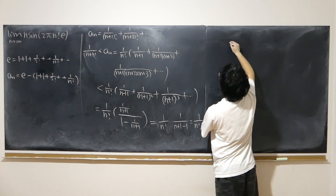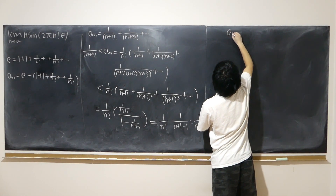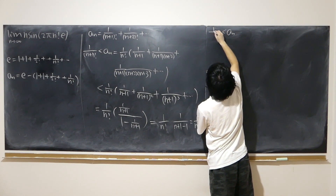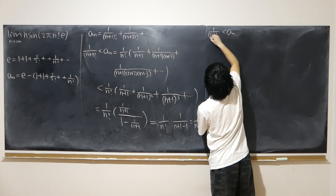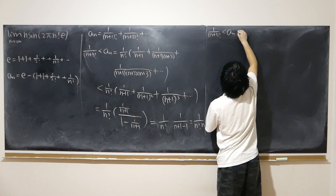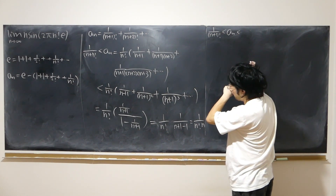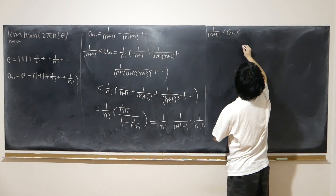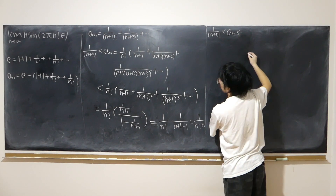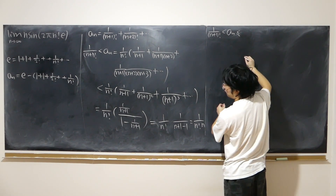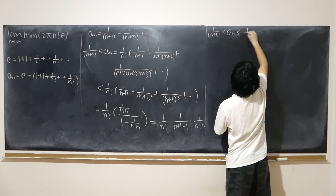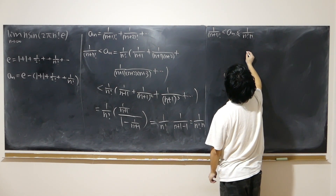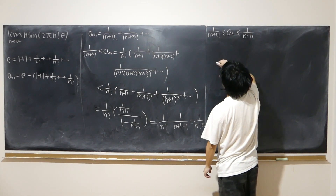So our conclusion is: aₙ is bigger than 1 over (n+1) factorial but no larger than 1 over (n·n factorial). We have squeezed aₙ between these two bounds.